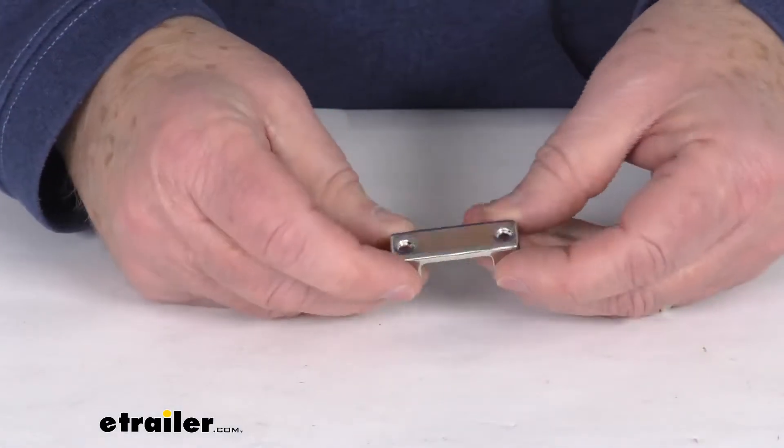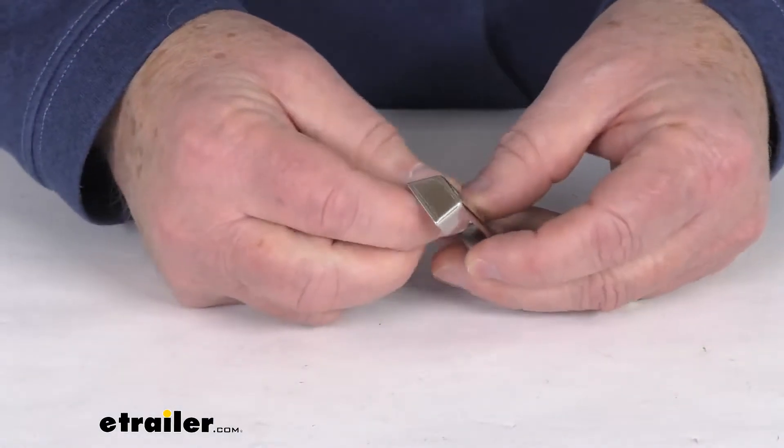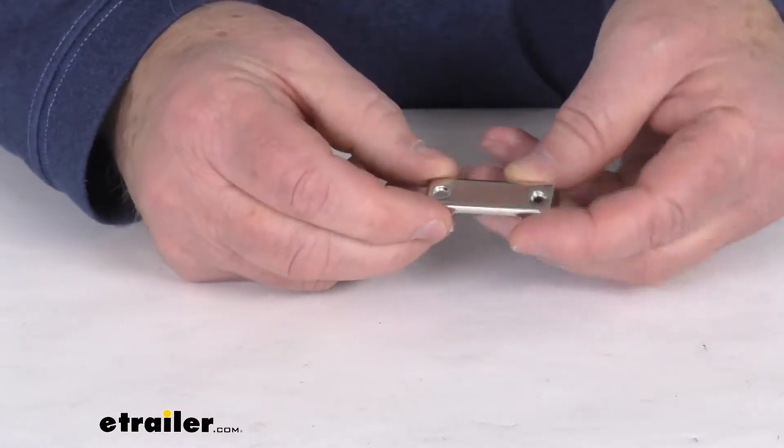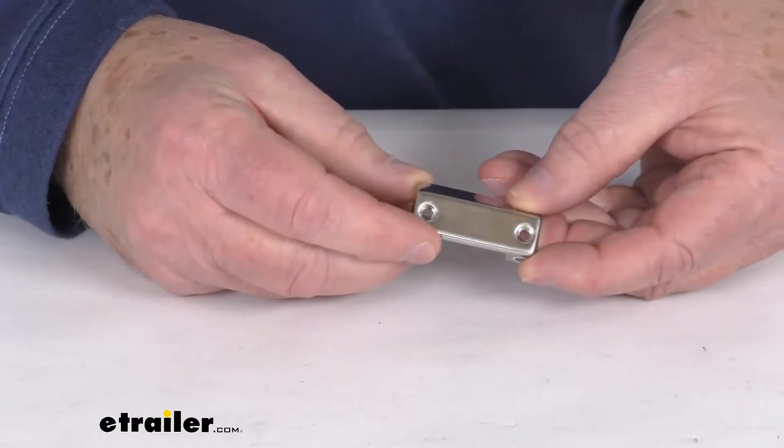Hello everybody, this is Jeff at E-Trailer.com. Today we're going to take a look at the stainless steel horizontal mounting cover for the Technique Mini LED Accent Lights.